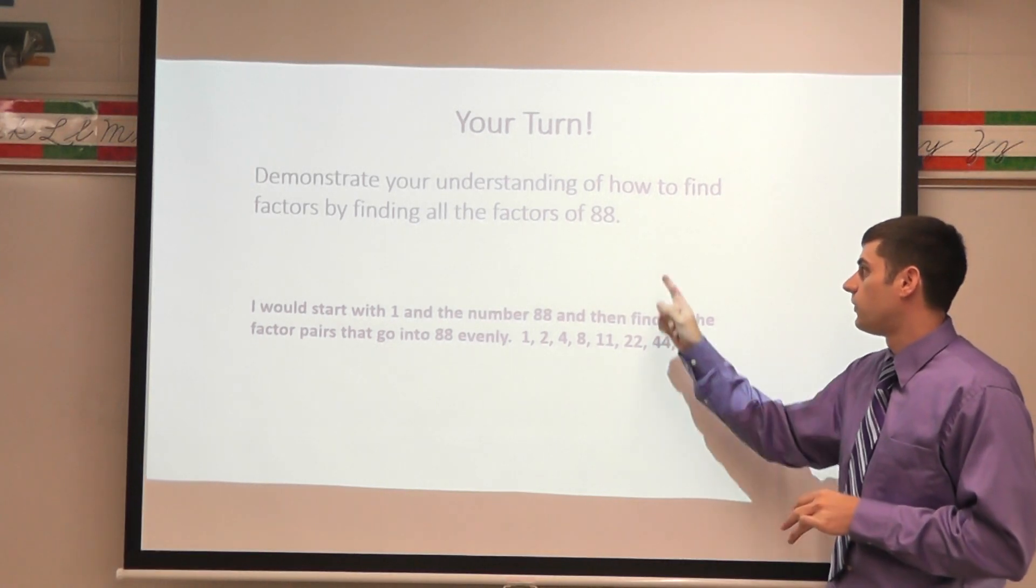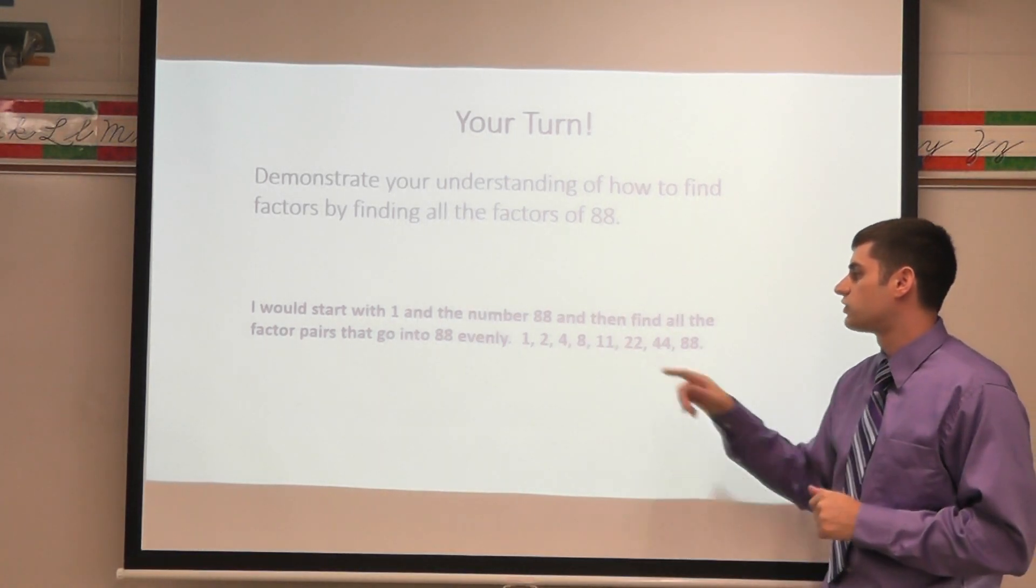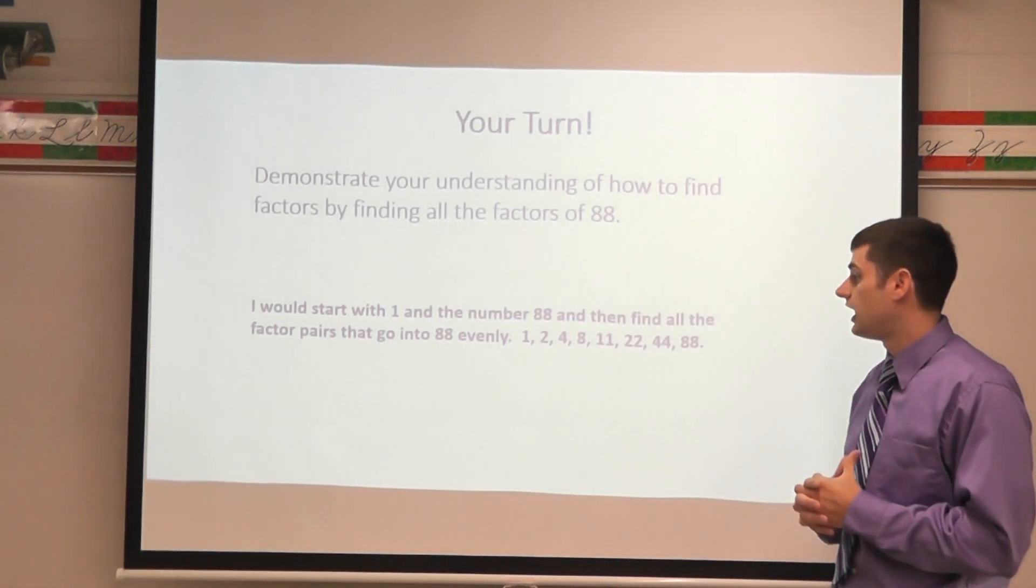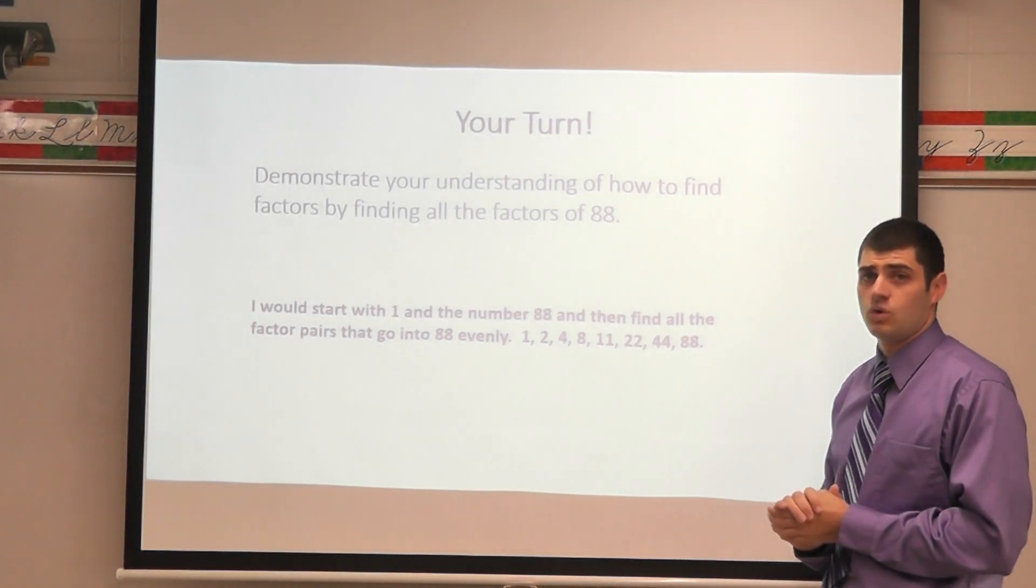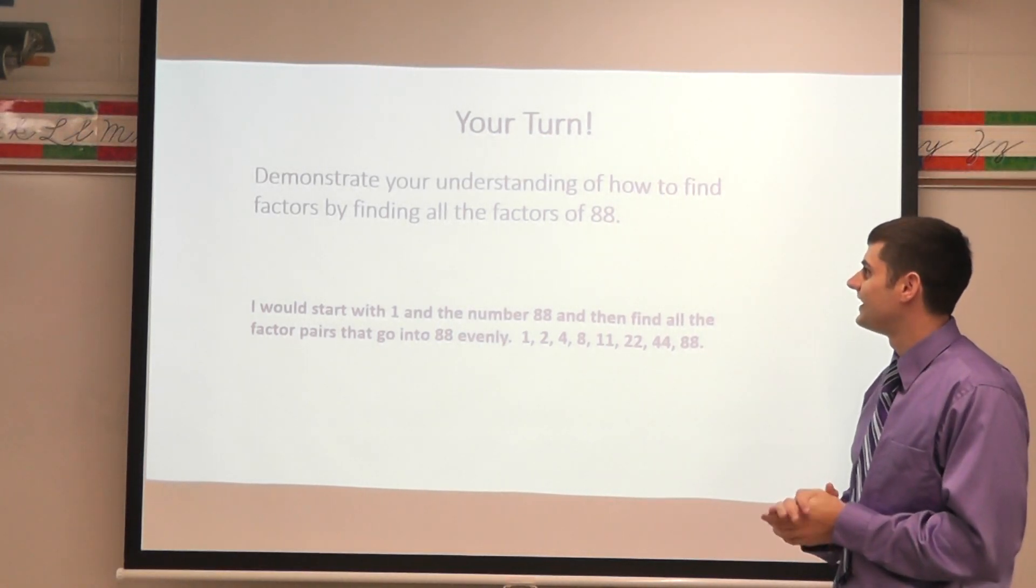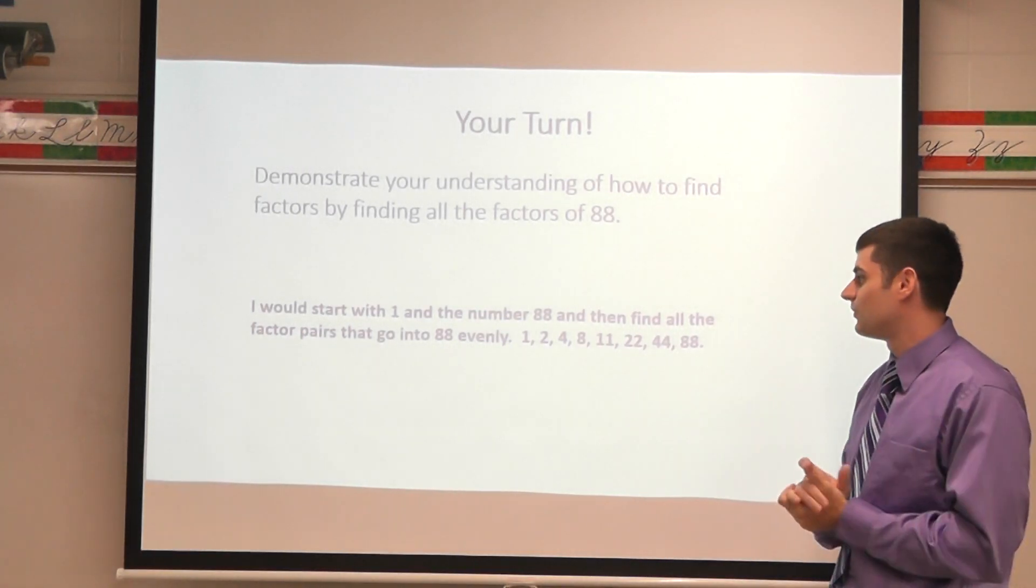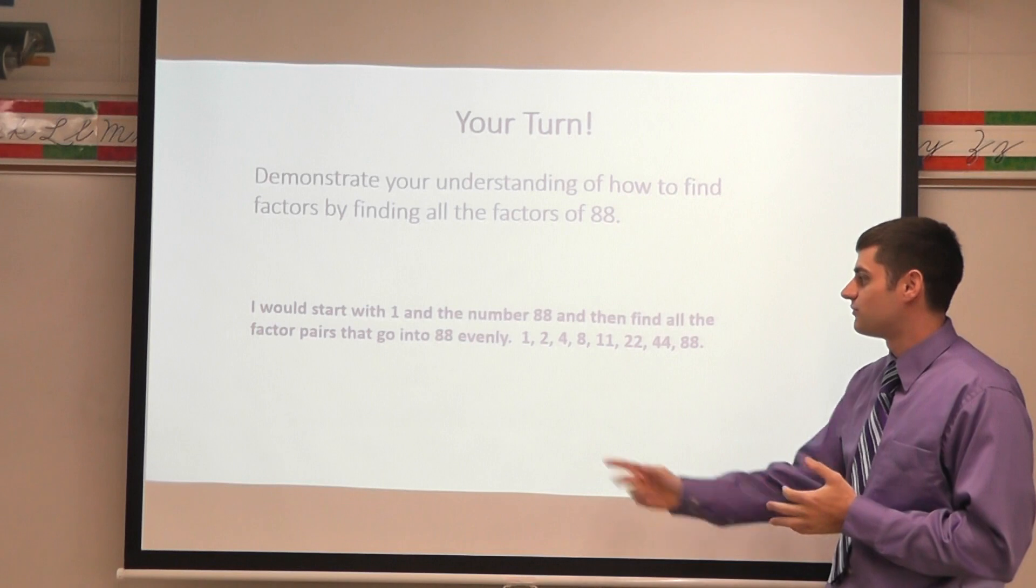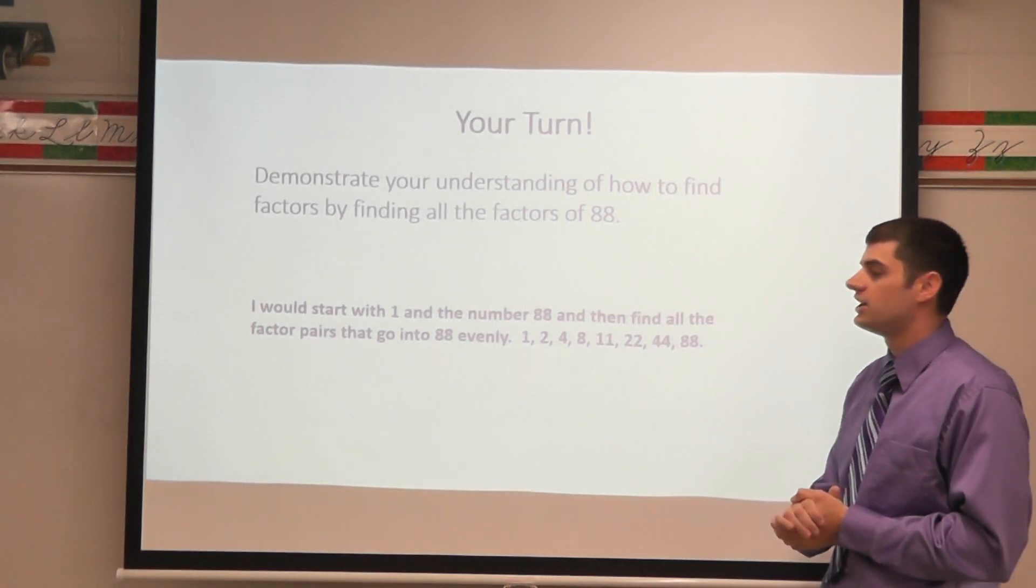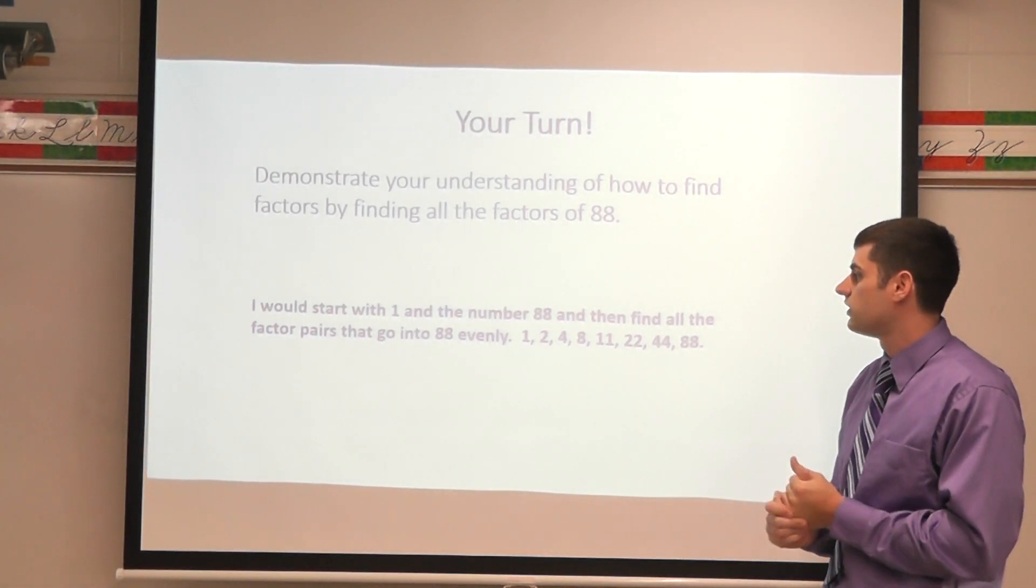4. I know that 4 goes into 88 because 4 times 22 would give me 88. 5, it doesn't end in a 0 or a 5, so I know 5 doesn't work. 6 will not work because both 2 and 3 do not divide into it evenly. So 6 is not going to work. 7 will not work.